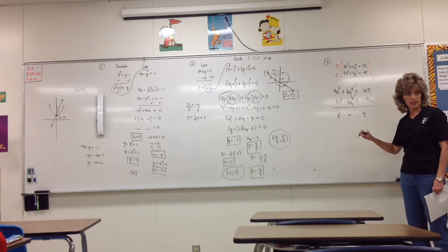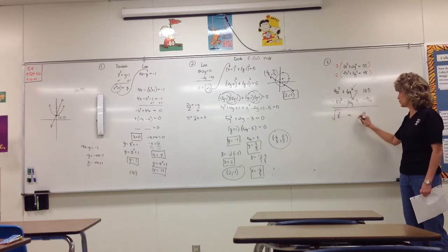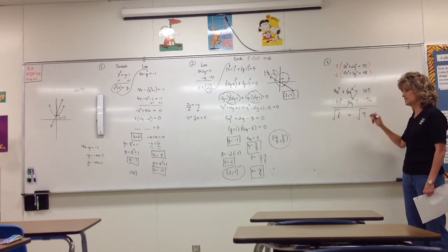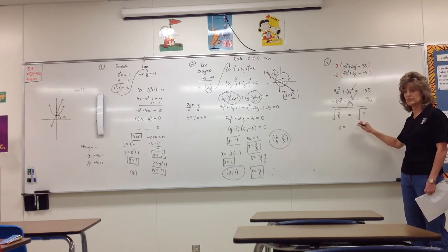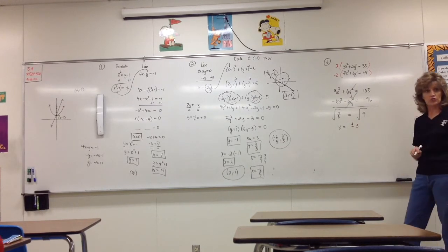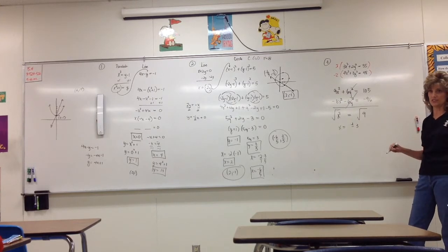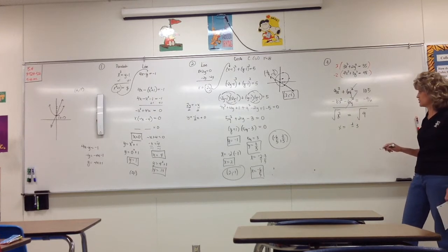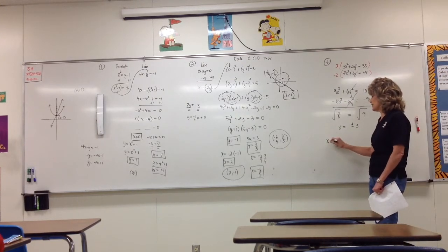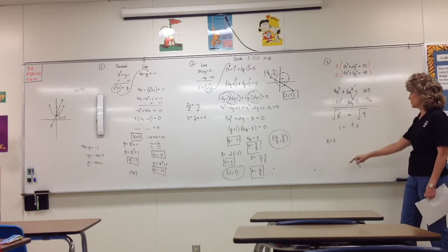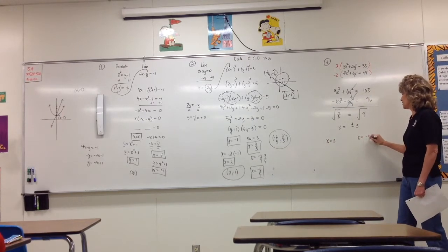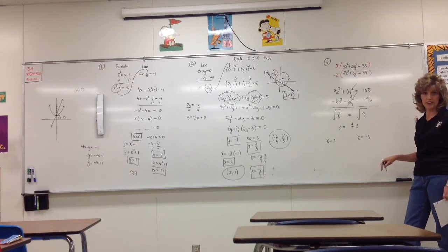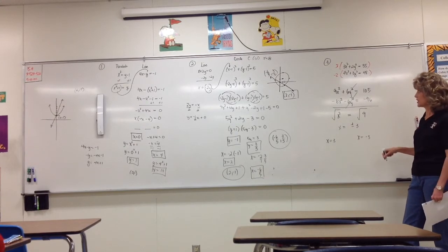To solve for x, we take the square root of both sides. Remember, you have to include plus or minus — so x equals plus or minus 3. Since we have plus or minus, we must consider both: if x equals 3, there's a y value to find, and if x equals negative 3, there are y values to find as well.